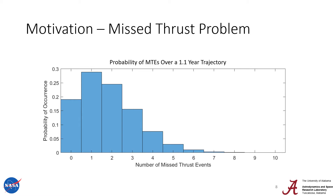If we look at a 1.1 year trajectory where the spacecraft is thrusting continuously, we can see that the probability of one or two missed thrust events is greater than zero missed thrust events. The cumulative likelihood of two or more missed thrust events is greater than 50%. So the question isn't will we deal with missed thrust events — we will. It's how many will there be and what will we do about them?